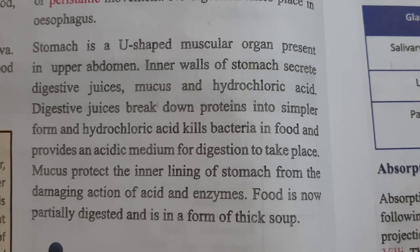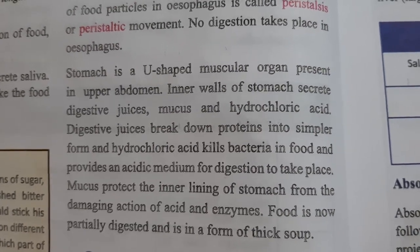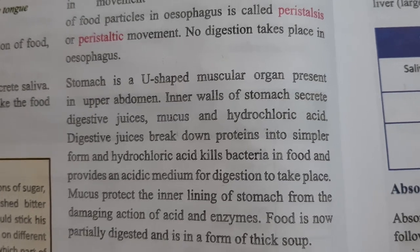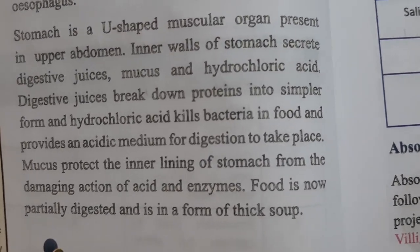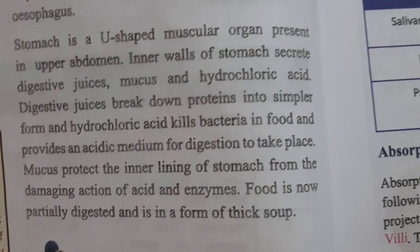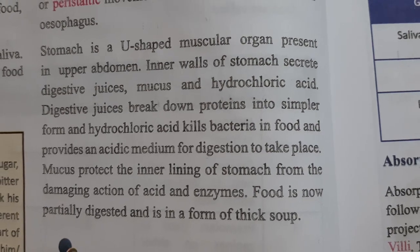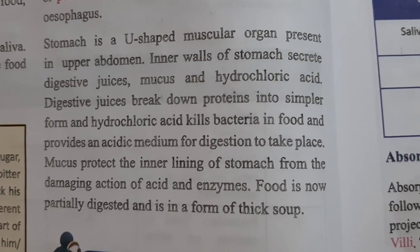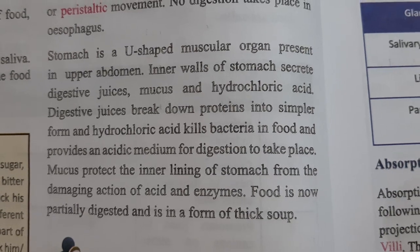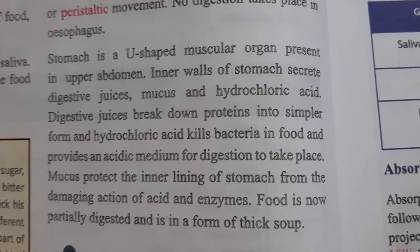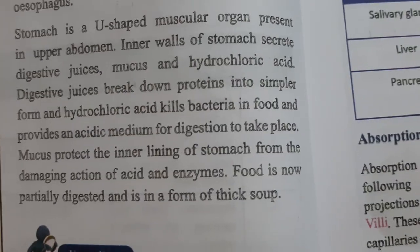The stomach is a U-shaped muscular organ present in the upper abdomen. The inner wall of the stomach secretes digestive juices that convert food into simpler substances. Hydrochloric acid kills bacteria in food and provides an acidic medium for digestion to take place. Mucus protects the inner lining of the stomach from the damaging action of acid and enzymes.